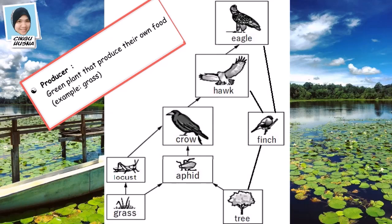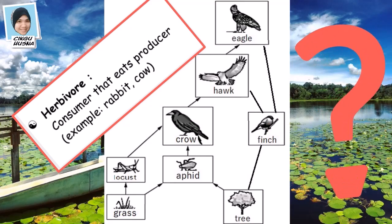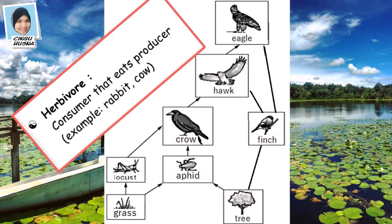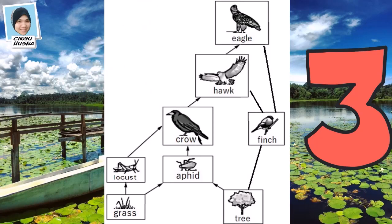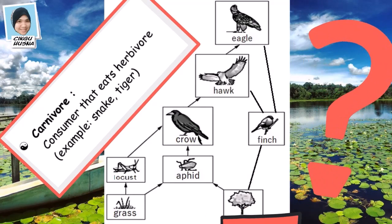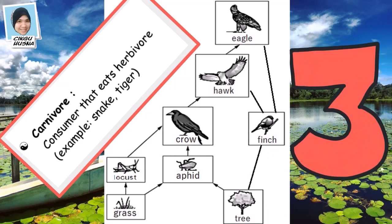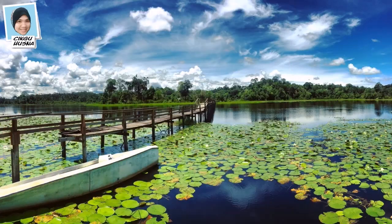Looking at the food web diagram: which organisms are the producers? There are actually two producers — the grass and the tree. How many herbivores are in the food web? There are three herbivores: the locust, aphid, and finch. And for carnivores — animals that eat other animals — there are also three: the crow, hawk, and eagle.